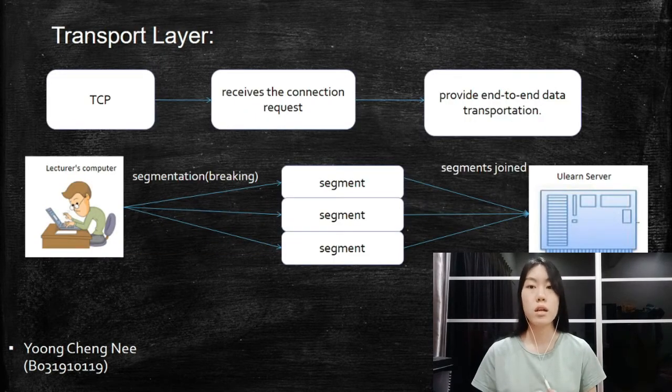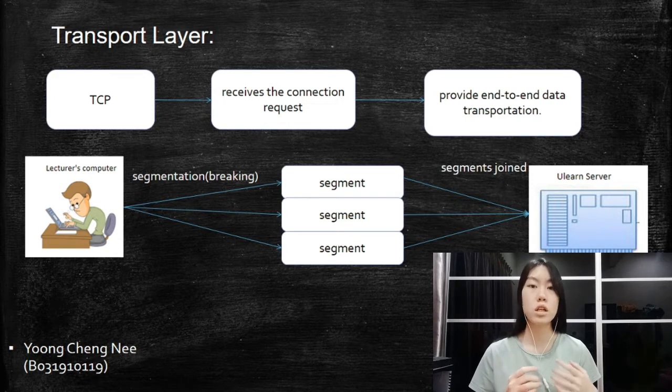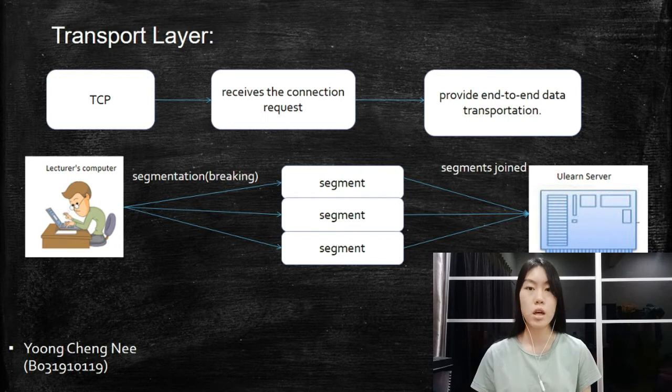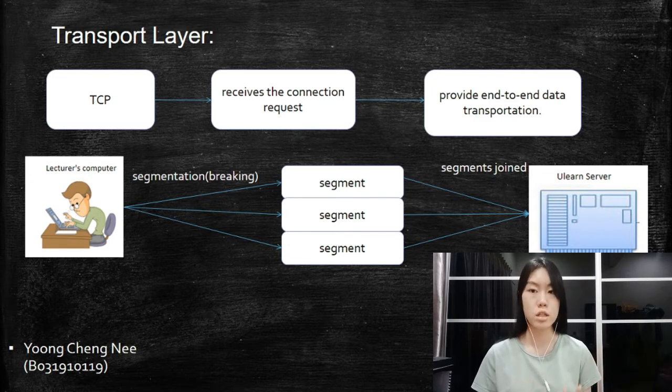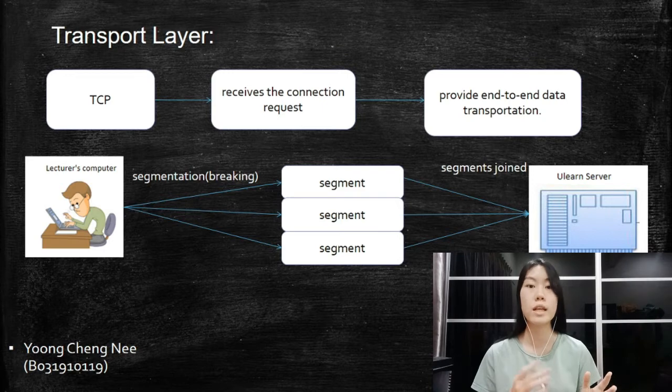In order to open a secure channel, the system needs to establish a connection to the destination. It passes a connection request to TCP, which is a connection-oriented protocol at the transport layer in OSI model. The TCP handler receives the connection request and provides end-to-end data transportation. On lecturer's computer, segmentation occurs where the data is broken into smaller pieces called segments.